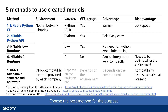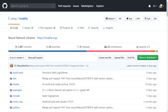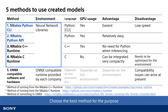As you can see here, many methods are available to implement models created in Neural Network Console in applications. Neural Network Console uses an open-source deep learning framework called the Neural Network Libraries for training and inference. So you can use the open-source Neural Network Libraries to easily implement trained models in applications. A total of four methods are available to use trained models through use of the Neural Network Libraries.